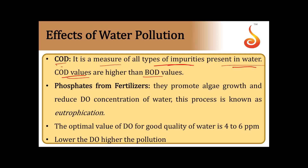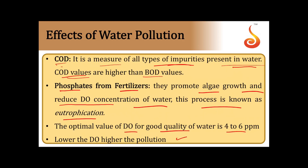Phosphates and fertilizers thrown into water promote algae growth and reduce dissolved oxygen (DO) concentration — this process is known as eutrophication. The optimal DO value for good quality water is 4 to 6 ppm. Lower the DO, higher the pollution.